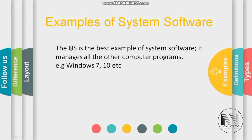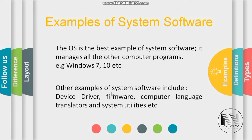Examples of system software include the operating system, which is the best example. Operating systems include Windows 10, Windows Vista, and Linux. Some other examples of system software are device drivers, firmware, computer language translators, and system utilities.